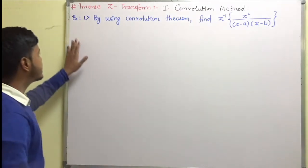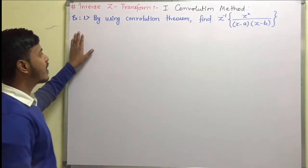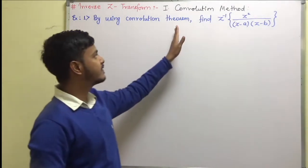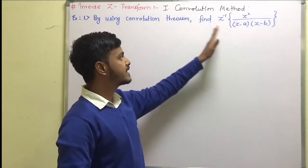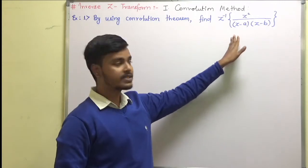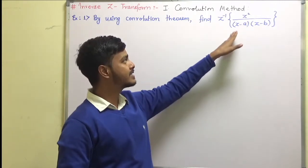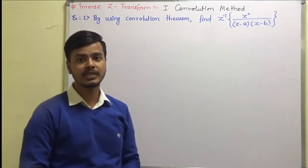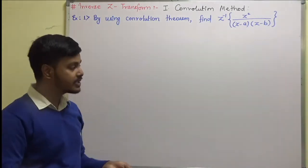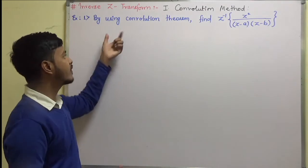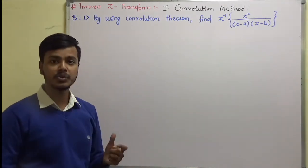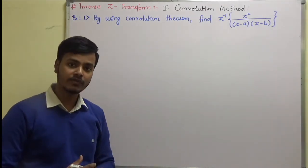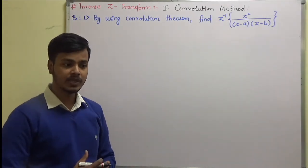This example says: by using the convolution theorem, find the z-inverse of z² / ((z − a)(z − b)). Since this question is on convolution theorem, you must know what the convolution theorem is.